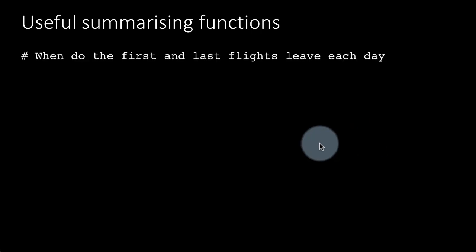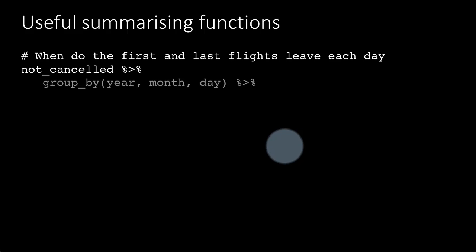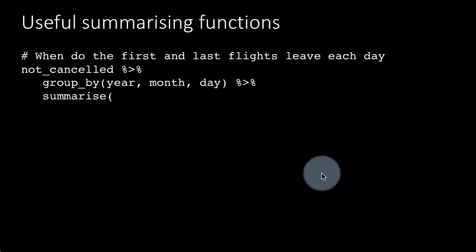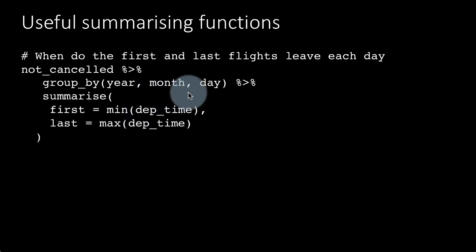So when do the first and last flights leave each day? So again, we are using here the fact that the flights are listed chronologically. So we are saying not_cancelled, which is the previous table that we created, group by year, month, day, summarize first is minimum of departure time, last is maximum of departure time. So the first flight for each day leaves at whatever time and the last flight leaves at whatever time, the departure times.